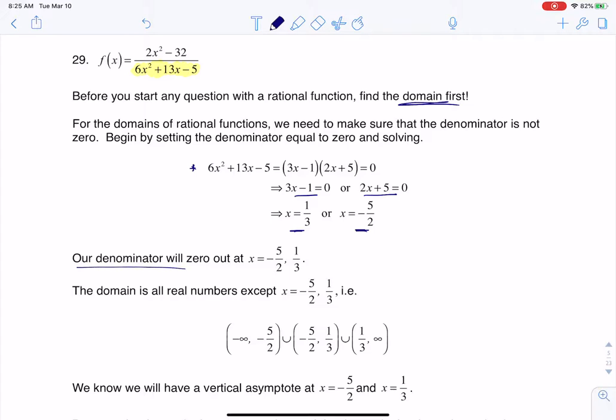So our denominator zeroes out at these two values, so the domain is going to be all real numbers except those two values. You can think of the number line, right? If I went from negative infinity to infinity, my domain would be all real numbers except for I need to put a hole at negative five-halves, and I need to put a hole at positive one-third.